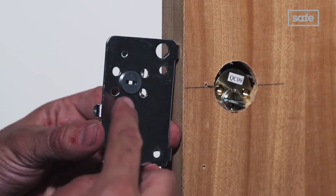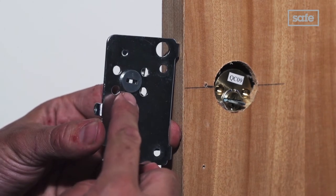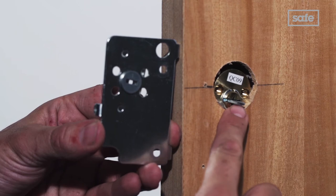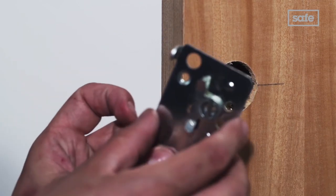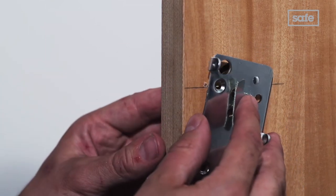Before fitting the mounting plate, make sure the notch on the rotatable cam follower is aligned with the connecting bar. Then place over the bar and attach to the door.